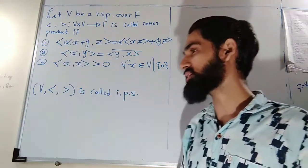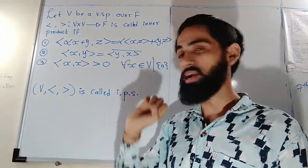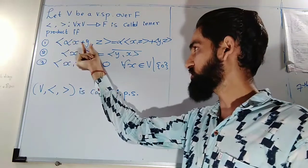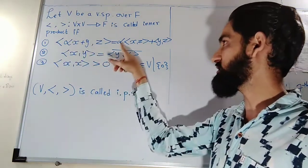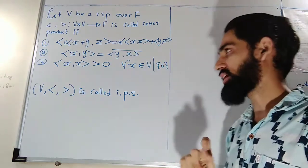The first property is that the operation inner product is linear with respect to the first coordinate. That means alpha X plus Y inner product with Z is same as alpha times inner product XZ plus inner product of YZ.